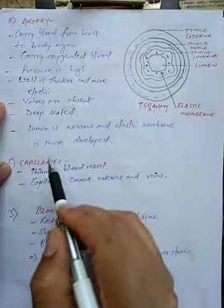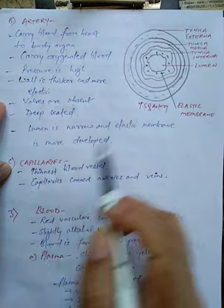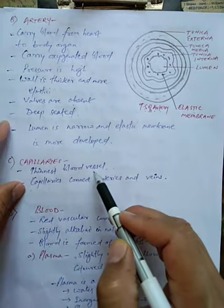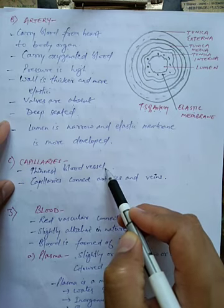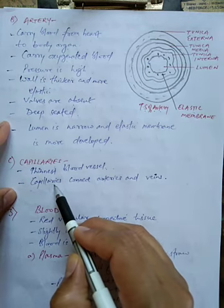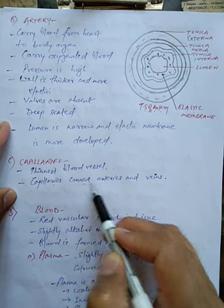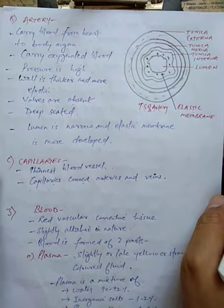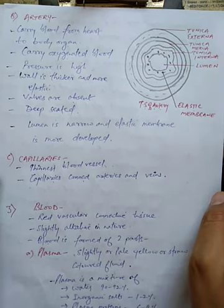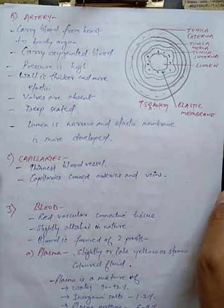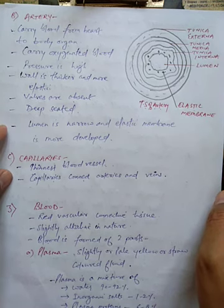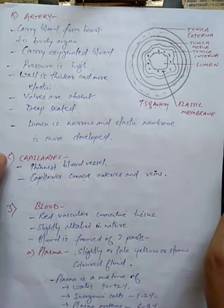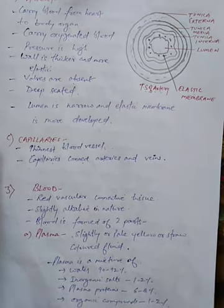The third type of blood vessel is capillaries. Capillaries are the thinnest blood vessels and they connect arteries and veins. Now we will move to the third component of the circulatory system, which is blood.